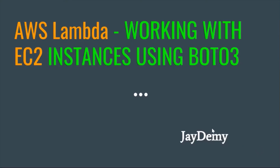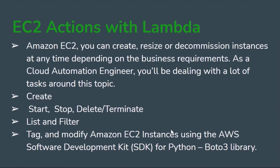As part of the AWS Lambda series, I want to explain how we can get the EC2 instance status and state. At this starting stage, I don't want to go into advanced concepts — I just want to give a basic understanding of how we can call different methods from AWS Lambda to get the EC2 instance state.